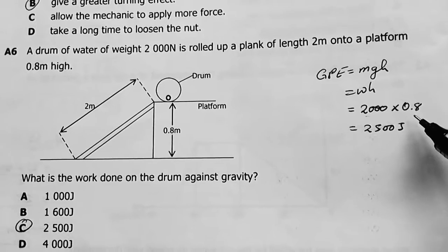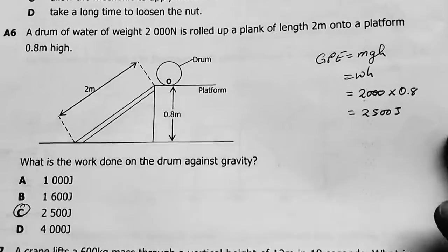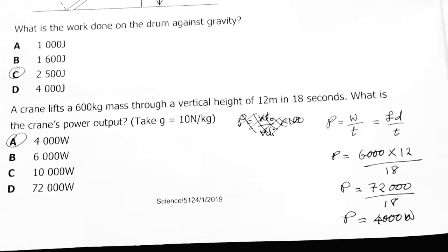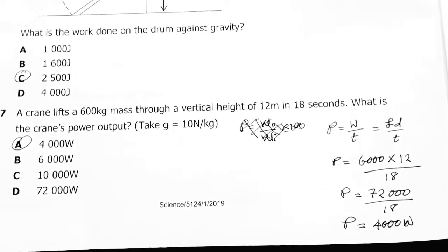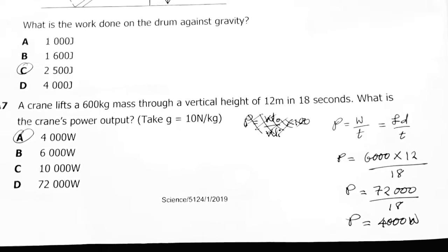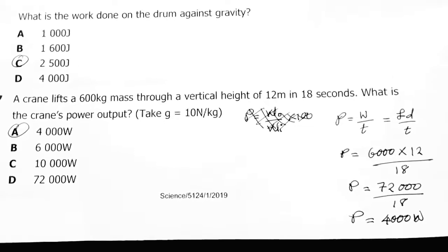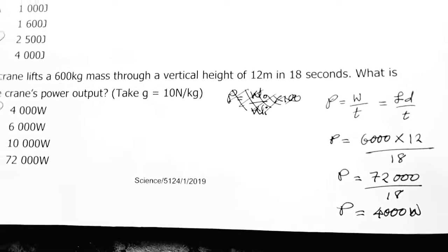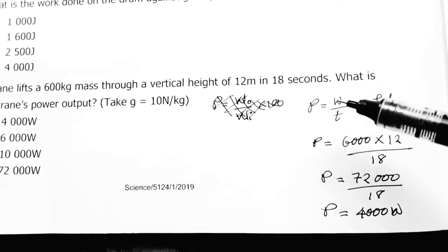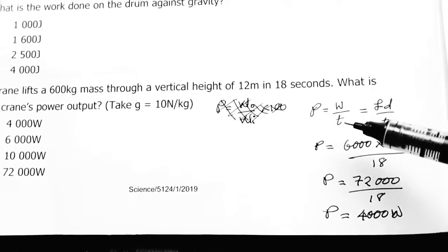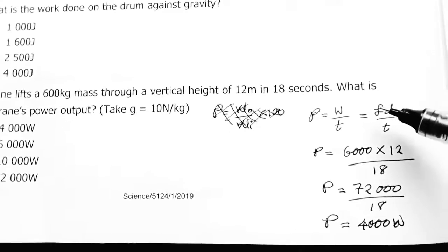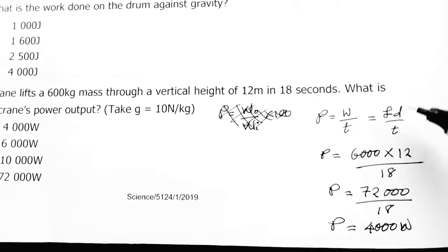Number 7: A crane lifts a 600 kg mass through a vertical height of 12 meters in 8 seconds. What is the crane's power output? Therefore, the crane's power is work over time. That's power: rate of doing work. Work equals force times distance.